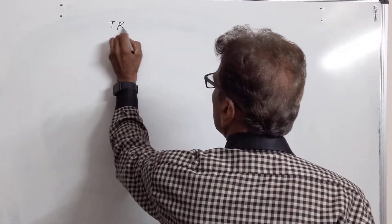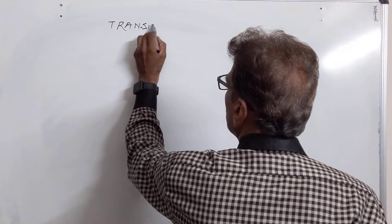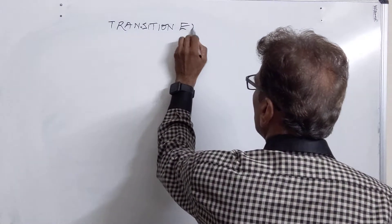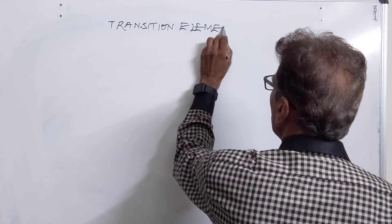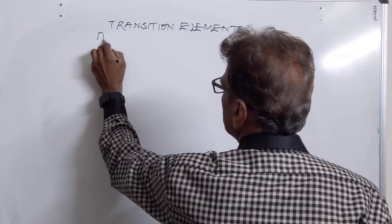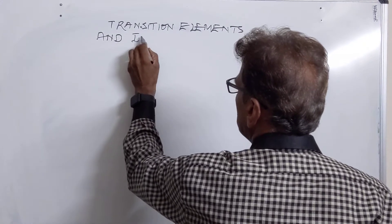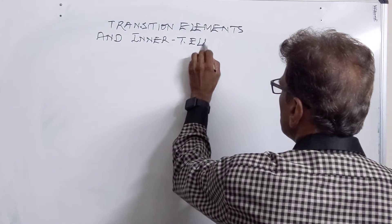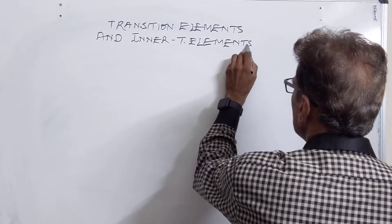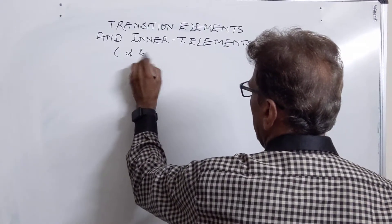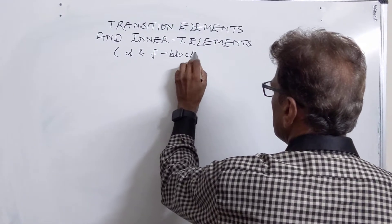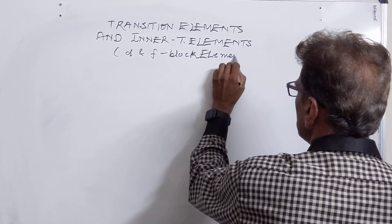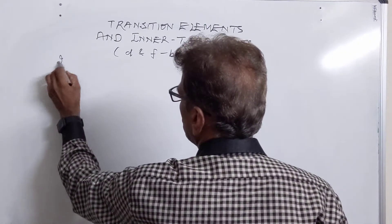We are starting with our transition elements, our 8th unit of the 12th class — transition elements and inner transition elements. The other name of this chapter 8 is D and F block elements. We are doing important questions of this unit.